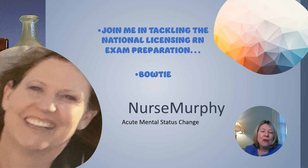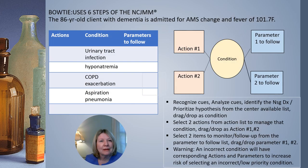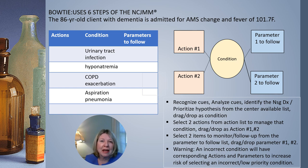Today our client will have acute mental status change. The bowtie question is guided by the NCSBN's Clinical Judgment Measurement Model, Layer 3. The test writers designed this question to have you recognize cues, analyze cues, and prioritize a hypothesis.